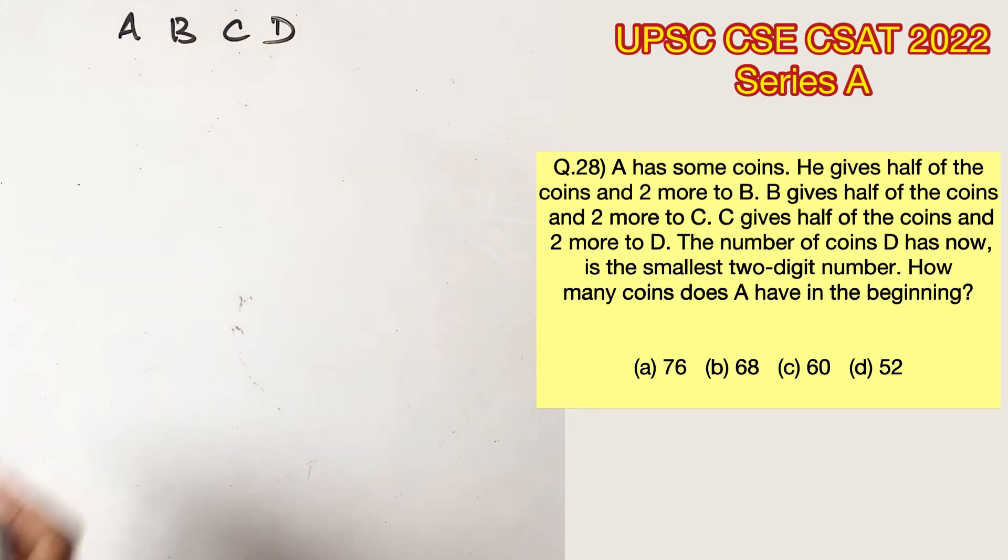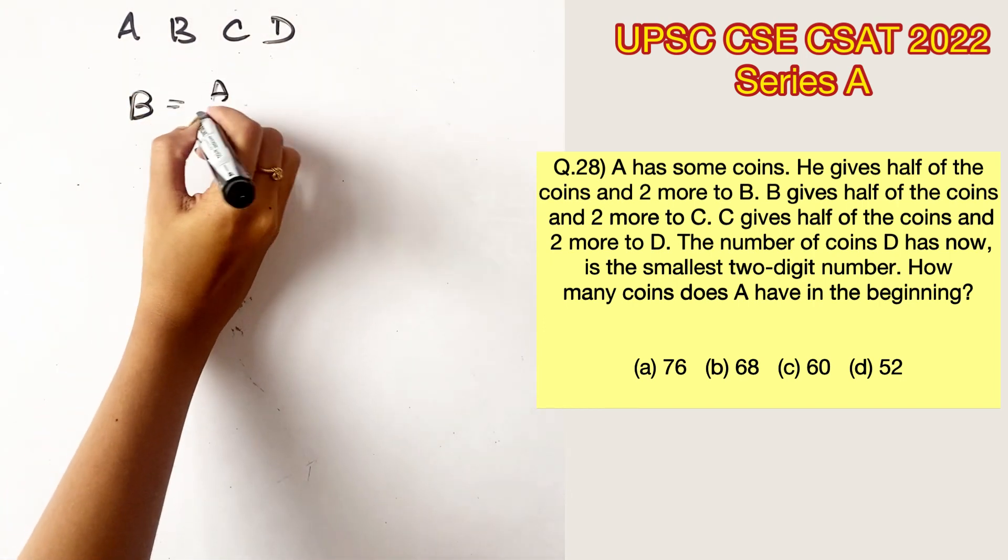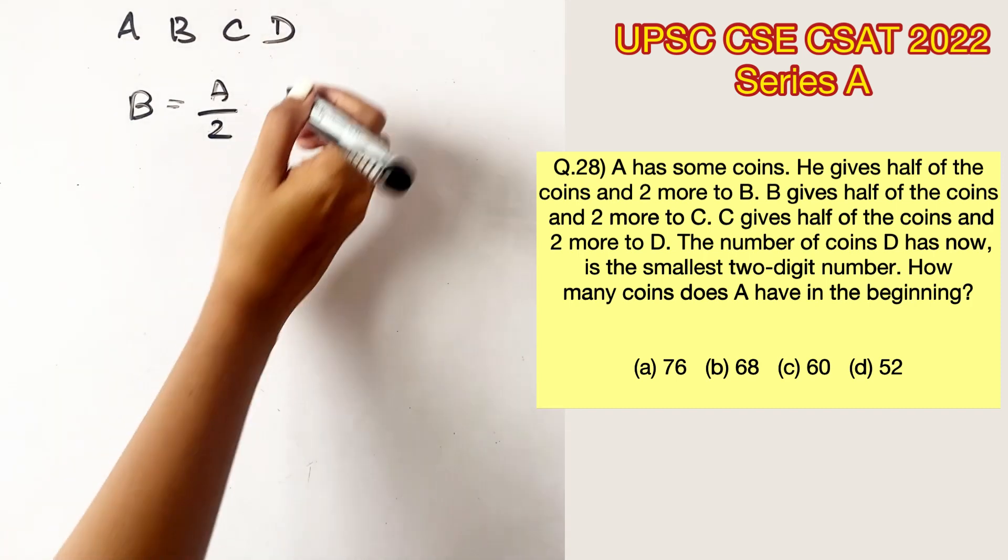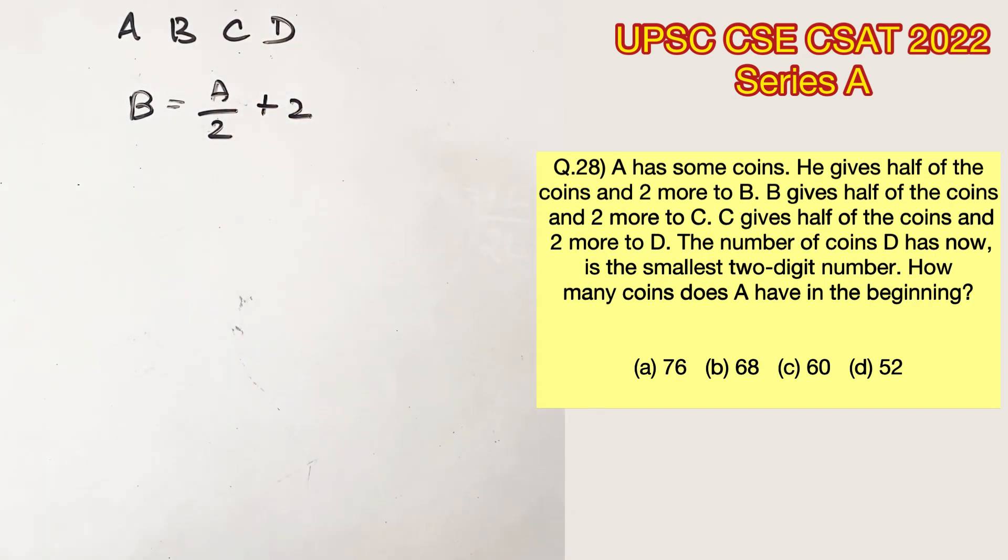Now, A gives half of his coins plus two more to B. So the equation can be written like this, where B is the number of coins B has. If you see in the equation,